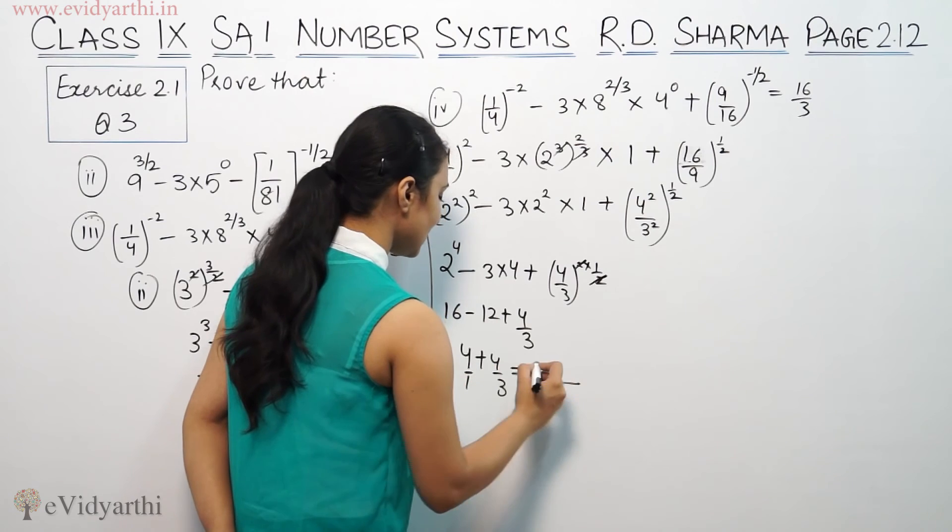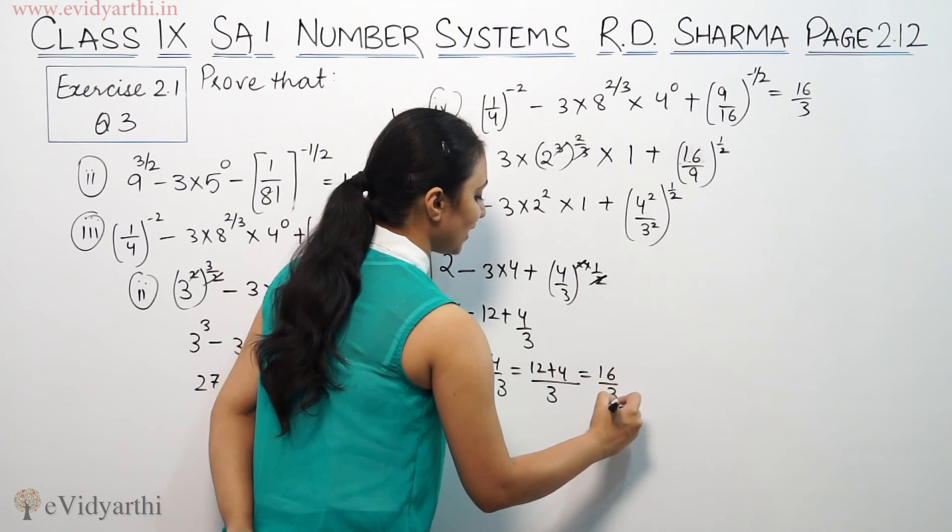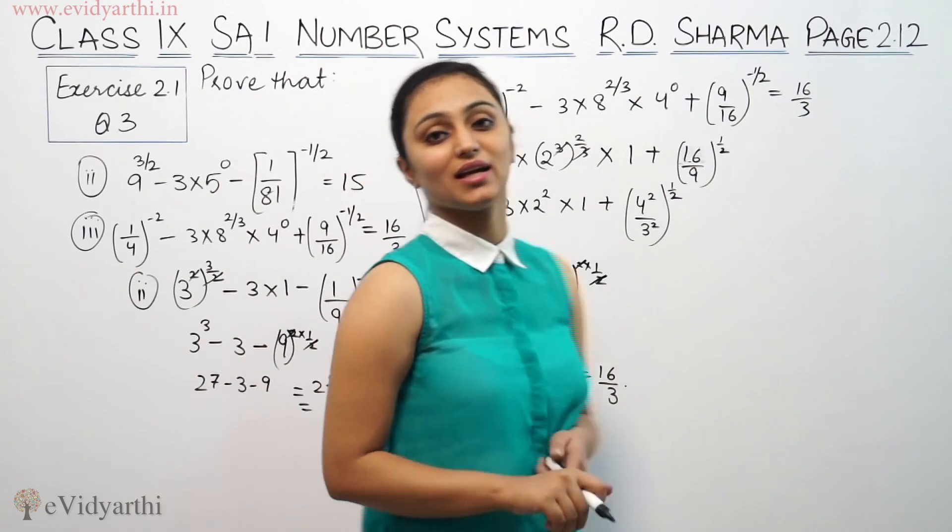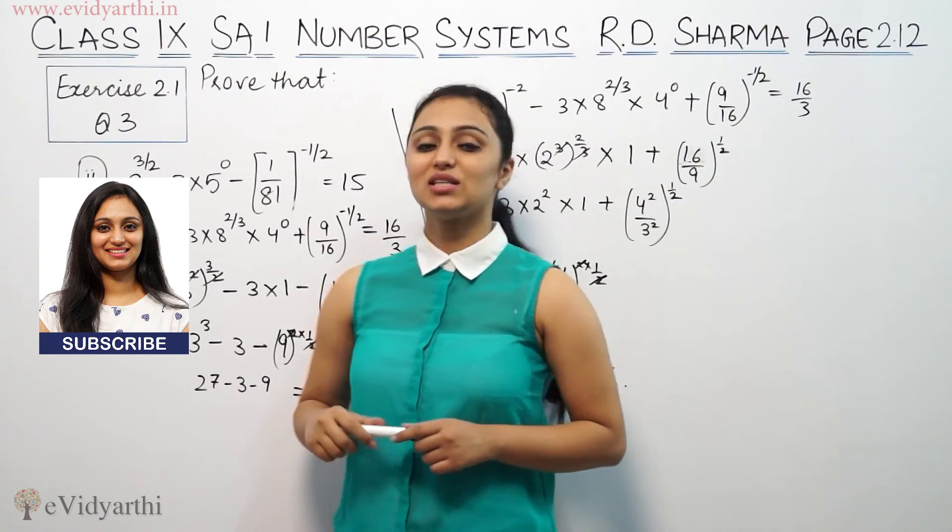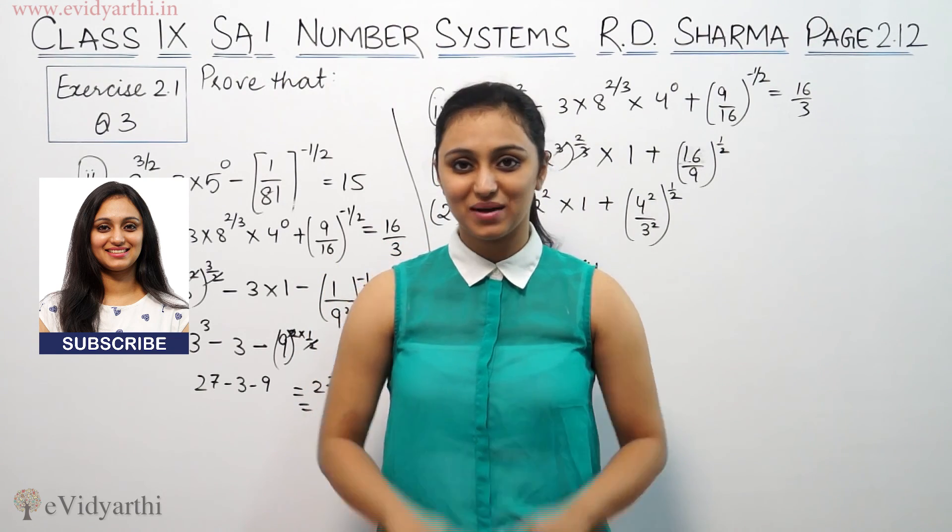So this is LCM with 12 plus 4 that means 16/3. So this was question 3 from exercise 2.1 and do watch the next video for some more questions. Bye bye.